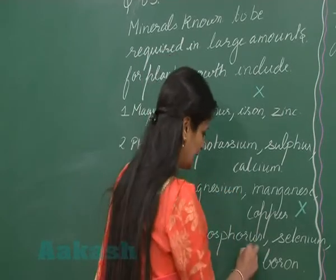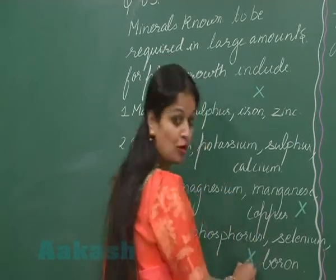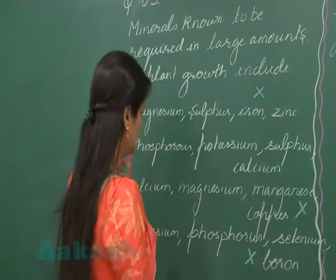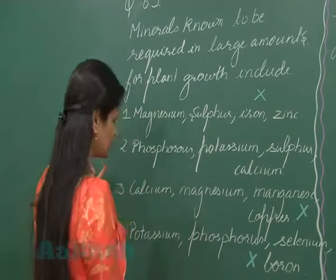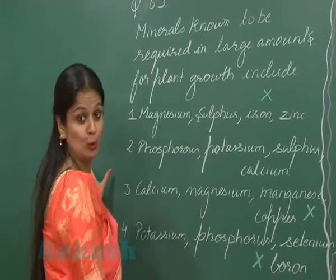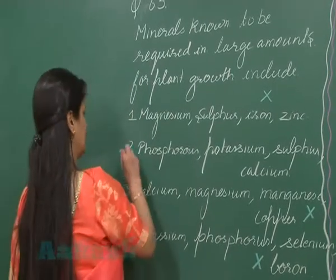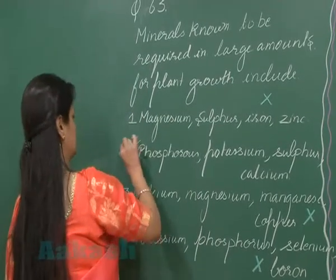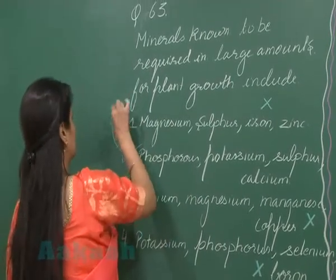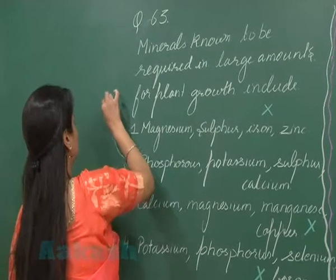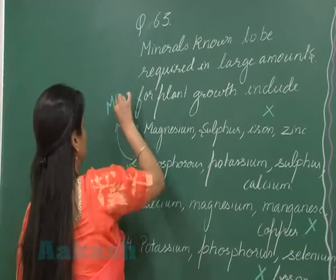So that option is also wrong. The correct option, which includes only macro elements, is option number 2.